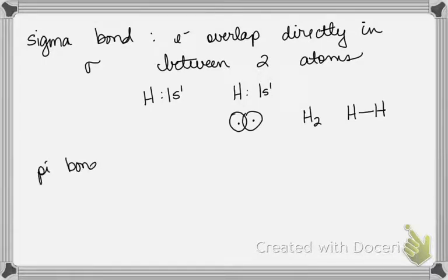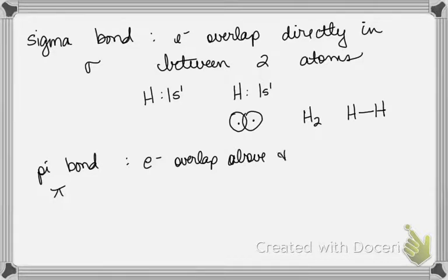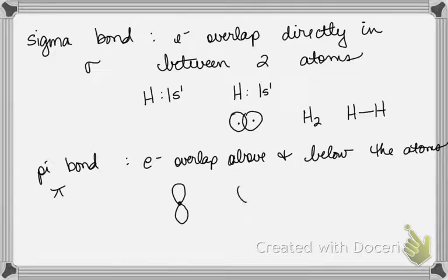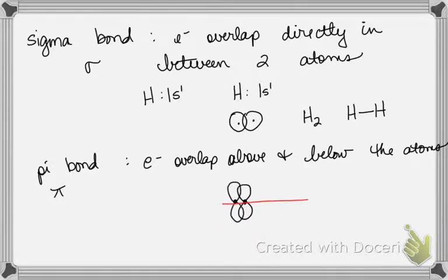A pi bond — symbol pi, but not 3.14 — is one where the electrons overlap above and below the plane of the atoms. Pi bonds happen typically with p orbitals. Directly in between the two atoms might be where a sigma bond forms, shown as a red line. The p orbitals don't overlap there; they overlap above and below the plane of the atoms. Even though there are two areas of overlap, that's still only one pi bond.